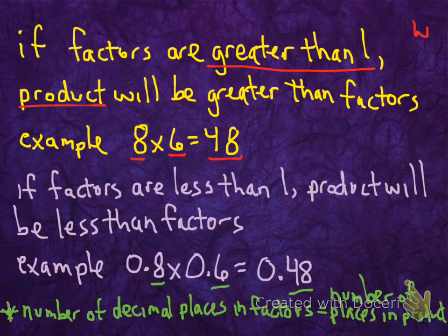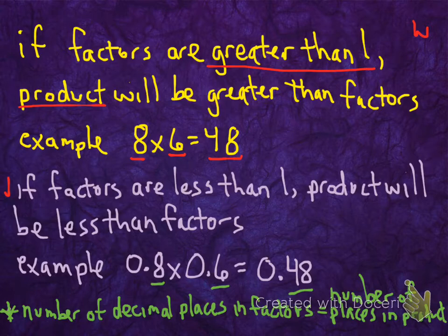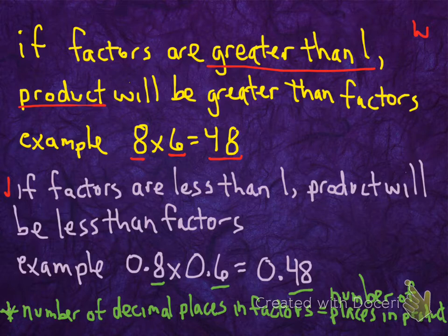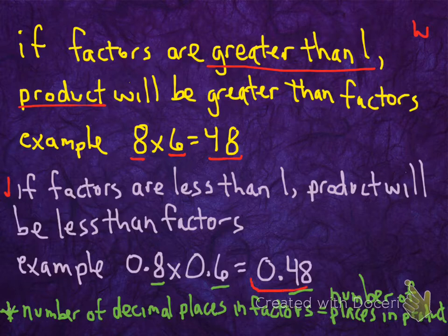But for our purposes today, working with decimals, if factors are less than 1, the product will be less than the factors. That sounds like a confusing sentence, but let me show you what I mean. Now we're looking at 0.8 times 0.6. That product is going to be 0.48. Factors here are less than 1. Remember, the factors are what is being multiplied together. 0.8 is less than 1. We have a 0 here as the whole, there's no wholes. There's only a part of the number, 0.8. And 0.6 is also less than 1. Therefore, the product will actually be less than the factors individually.